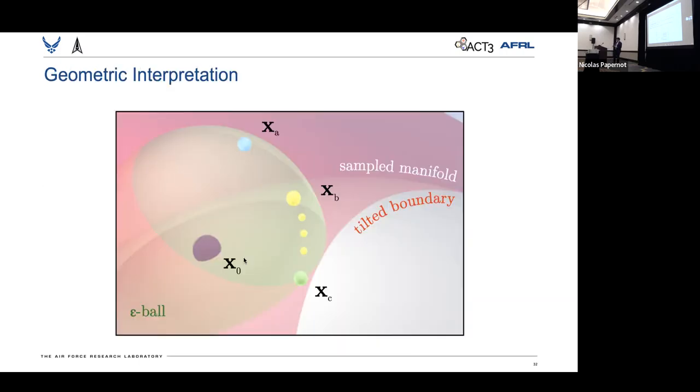This also leads to a natural geometric interpretation, so we can find adversarial samples that are concentrated near the manifold with higher probability, and this is something I'd be willing to discuss in the poster session.